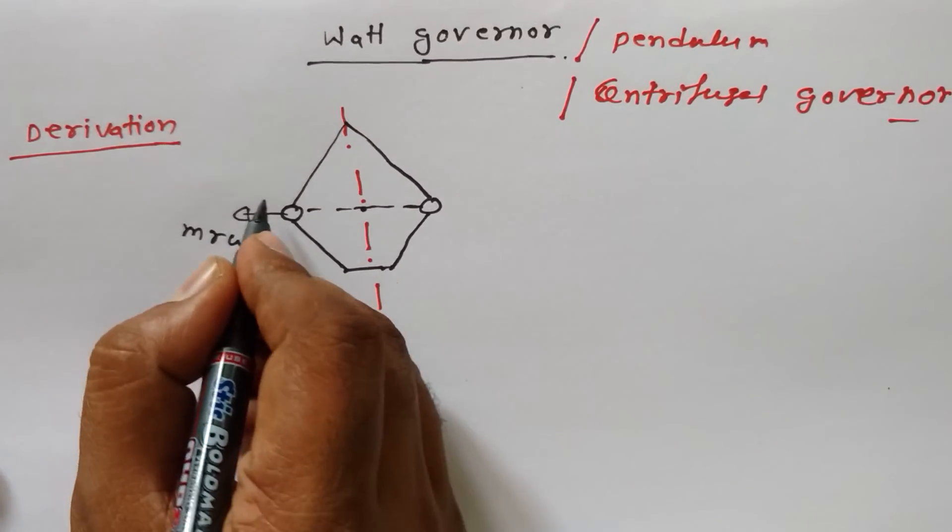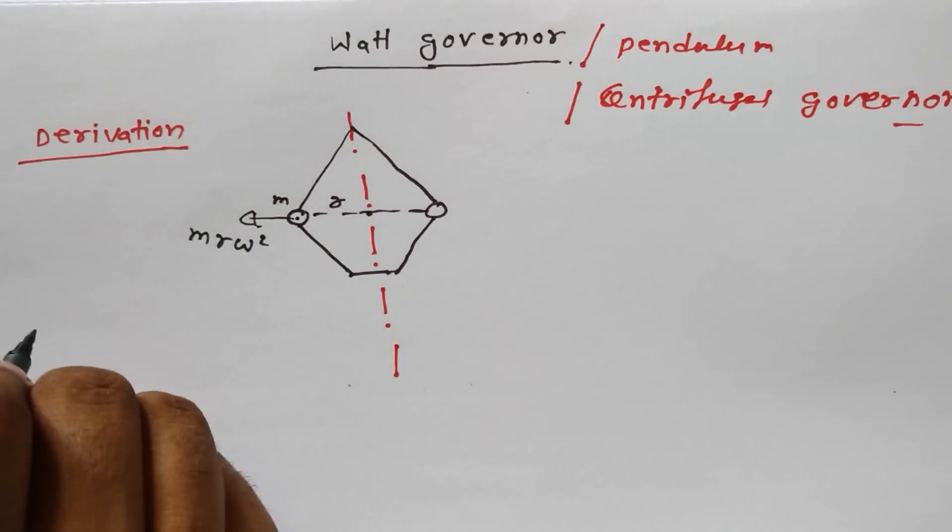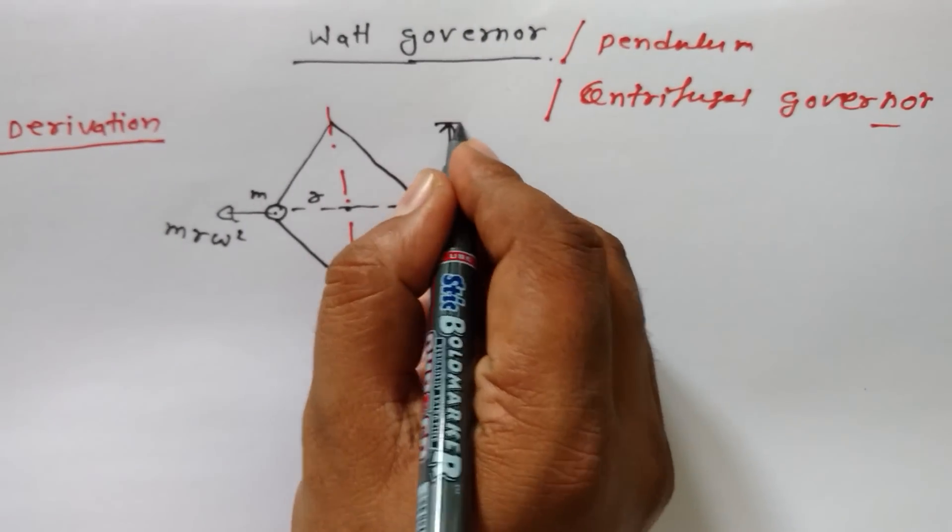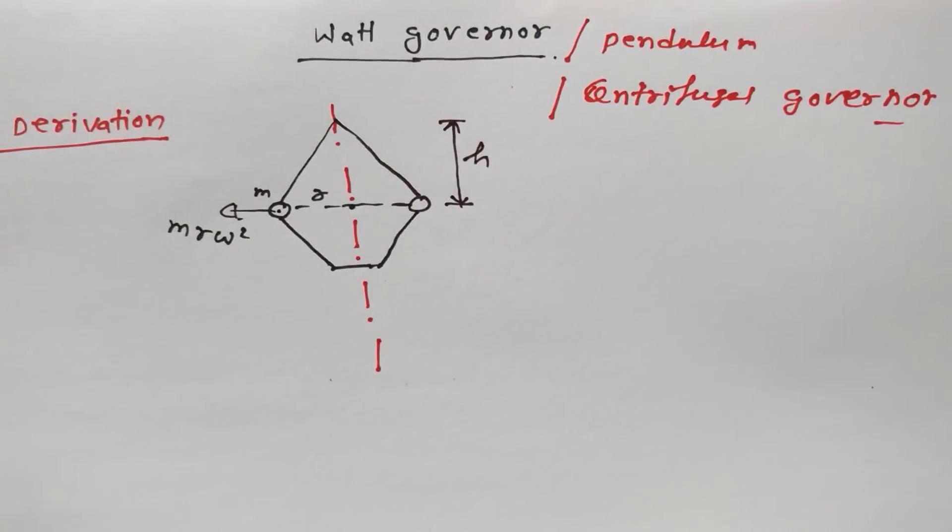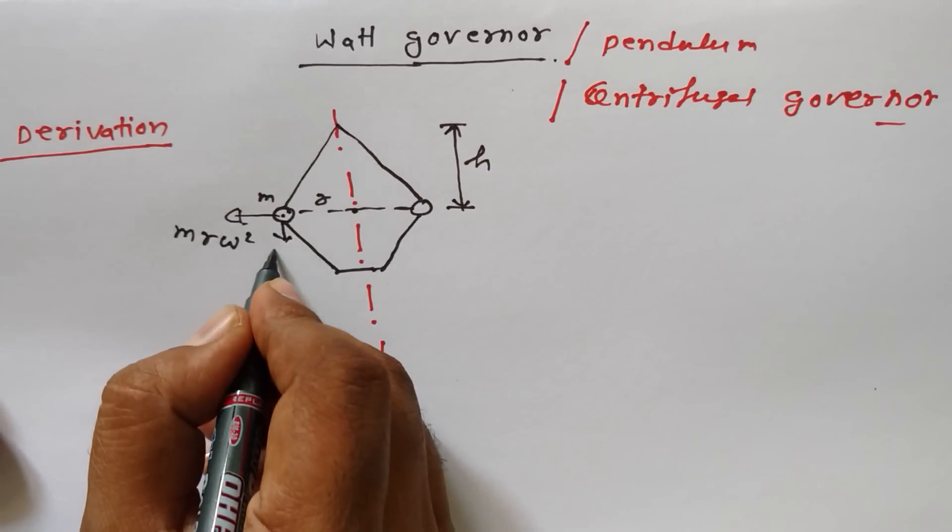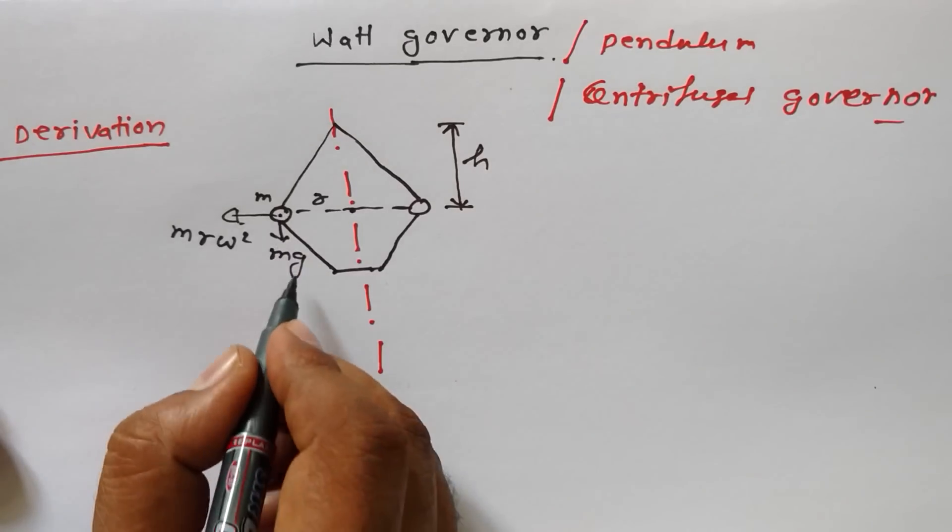From after derivation we can find out the value of h. h means height of the governor - that is important. Because of this mass, there is a force acting here that is mg - mass of the ball and acceleration due to gravity. On the opposite side there is another force.